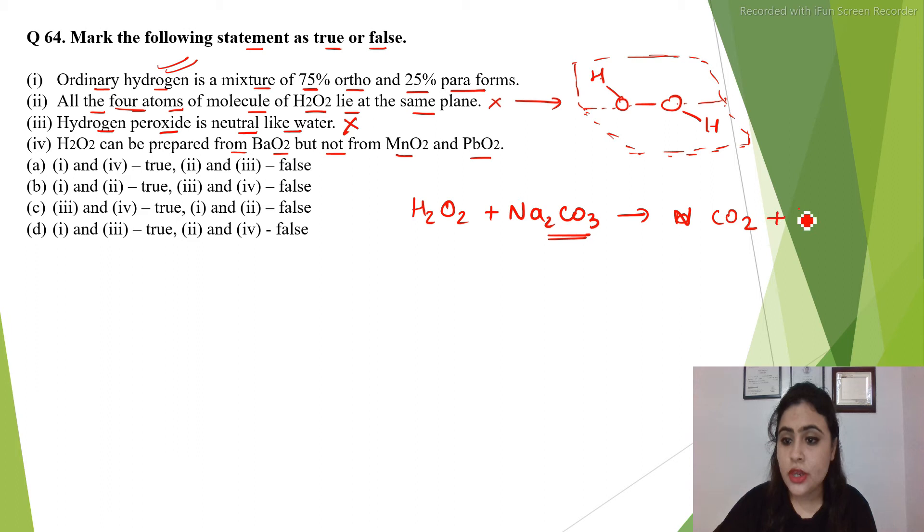Carbon dioxide will be evolved, water will be also formed. What will be the oxide left? Tell me, this will be Na2 and this is O2. So Na2O2 will be the oxide left behind.